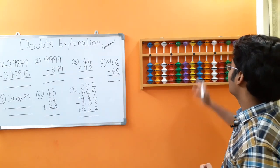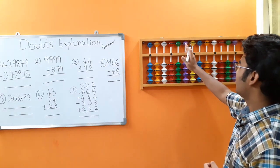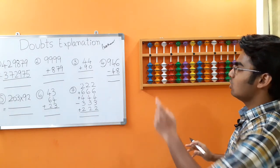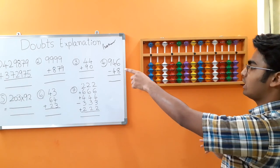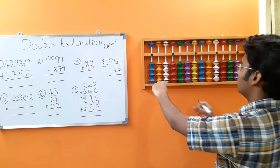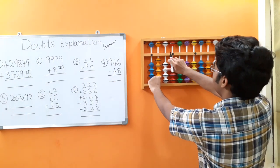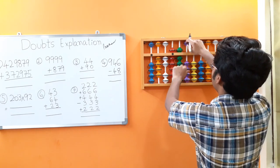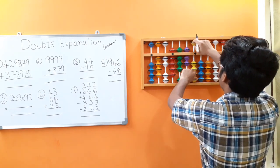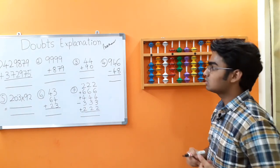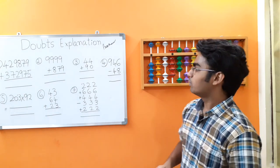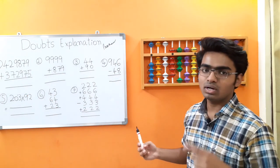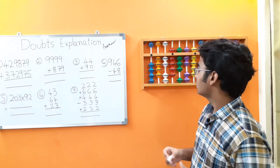We should start from the lakhs rod. Units, tens, hundreds, thousands, ten thousands, one lakh. I have placed 429879 on the big Abacus — hope you will like this. Plus 372975. Let's add one number by one number.